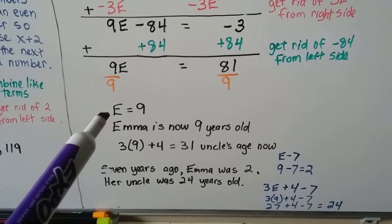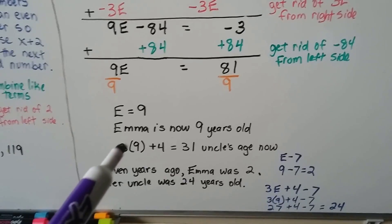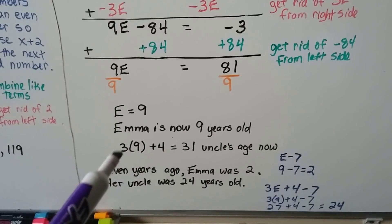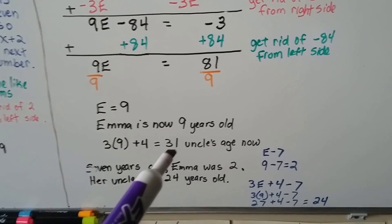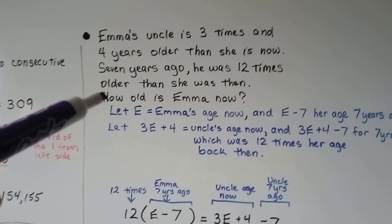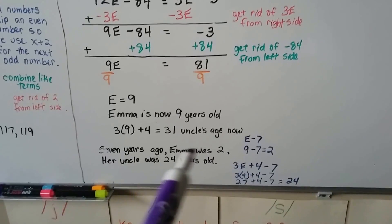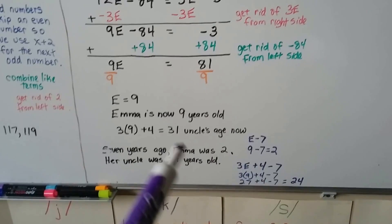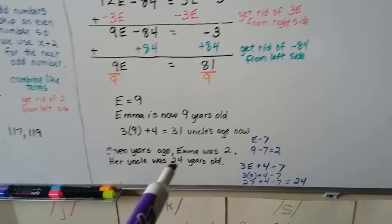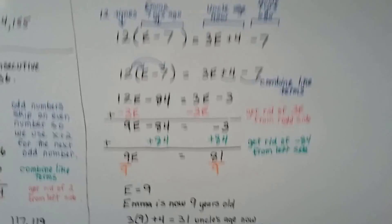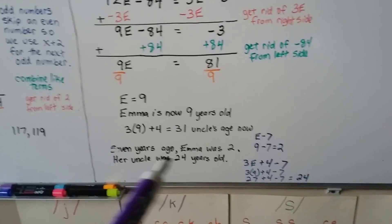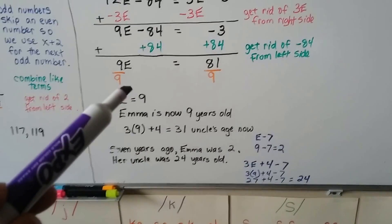So e minus 7 would be 2 — Emma's age seven years ago. Her uncle's age now is three times 9 plus 4, which is 27 plus 4, so he's 31 years old now. Seven years ago he was 24. Was he 12 times older than she was back then? If she was 2 and he was 24, yes — he was 12 times older. So we know she's 9 and it works.